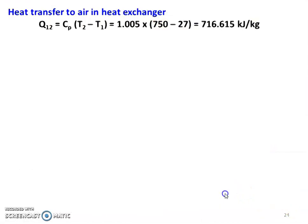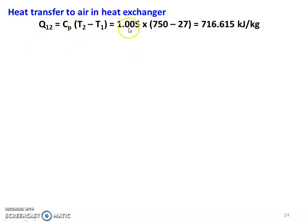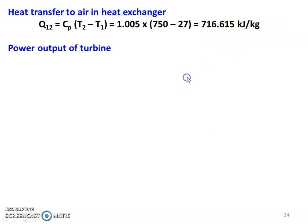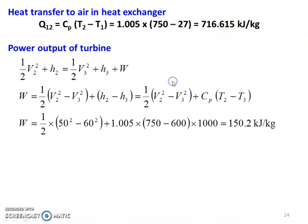First, the heat transfer to the air in the heat exchanger: Q12 = CP × (T2 − T1) = 1.005 × (750 − 27) = 726.615 kJ per kilogram. Then we find the power output of the turbine.